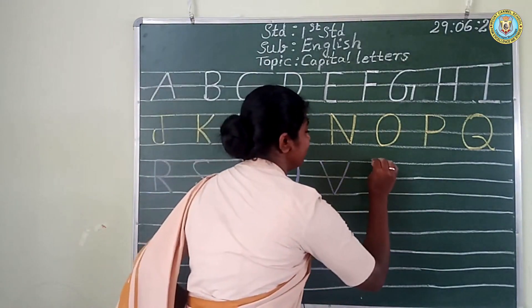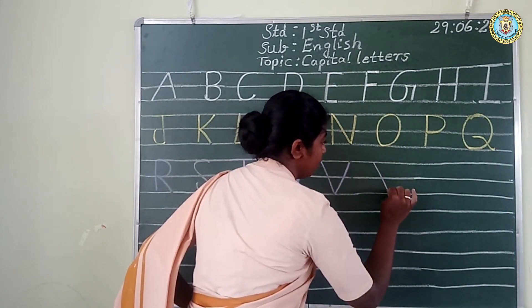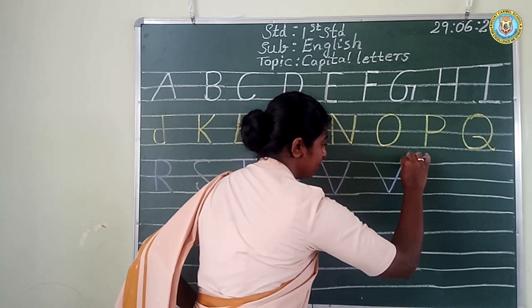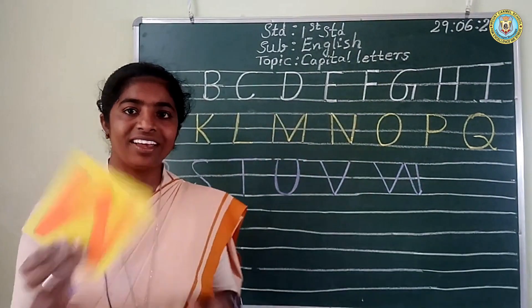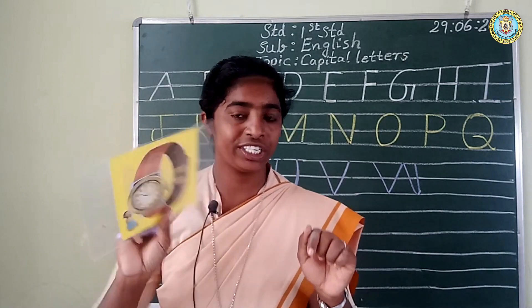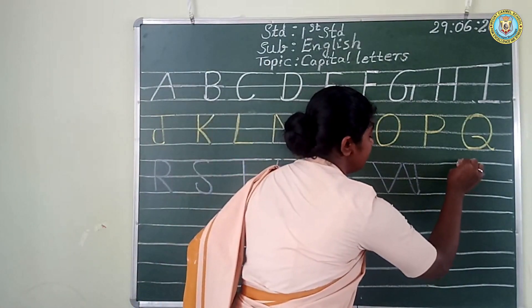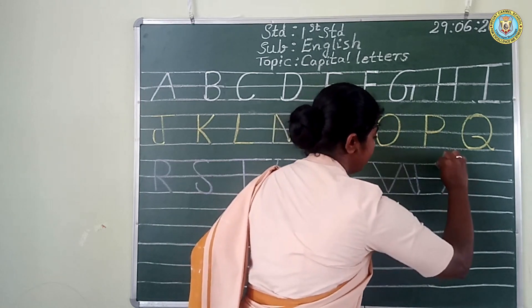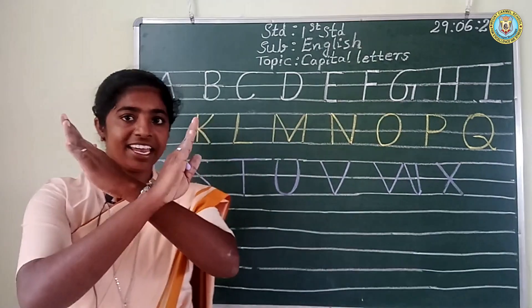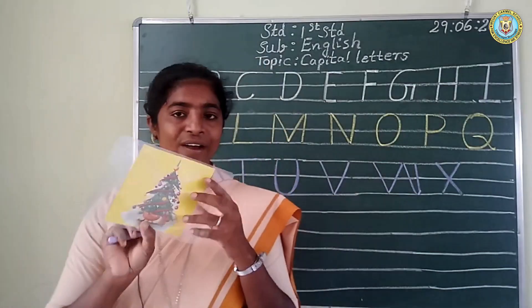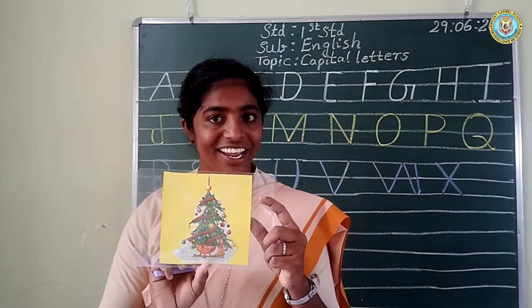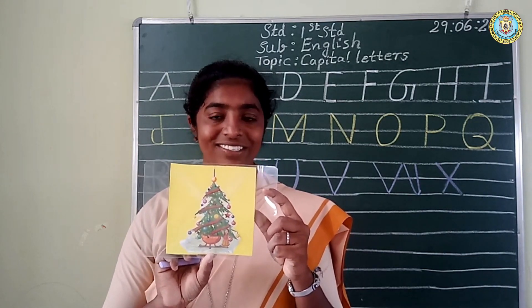Next letter. The slanting line, one more slanting line, the slanting line and one more slanting line. W. W for watch. W for watch. Look at the watch. Next letter. The slanting line, another slanting line. X. X for Xmas tree. X for Xmas tree. Have you all seen a Christmas tree? Yes, during Christmas time we see a Christmas tree decorated with balloons and lights.